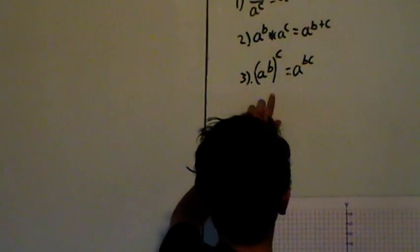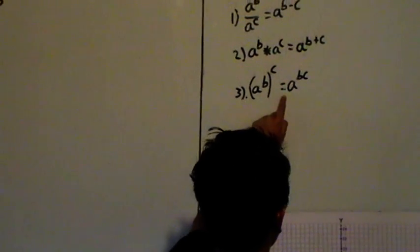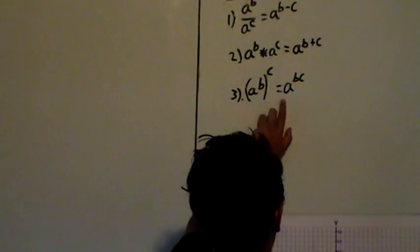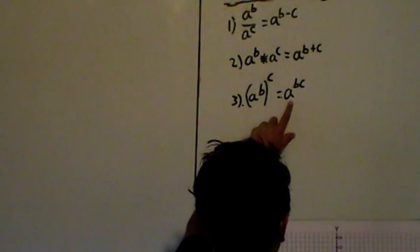Rule number three: A power B in a bracket, power C, equals the multiplication of the powers, which is A power B times C.